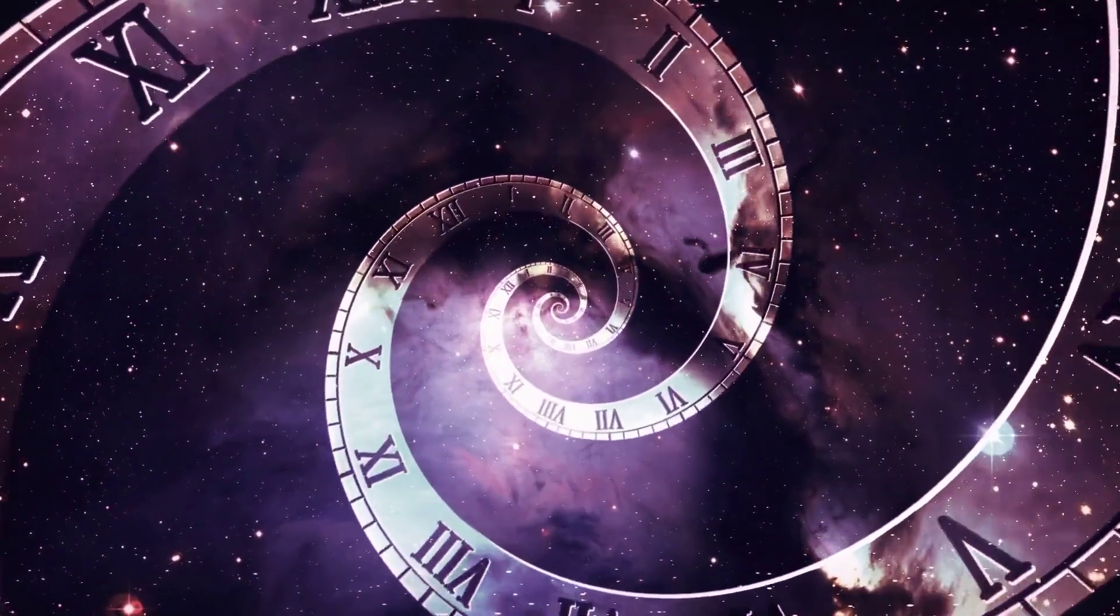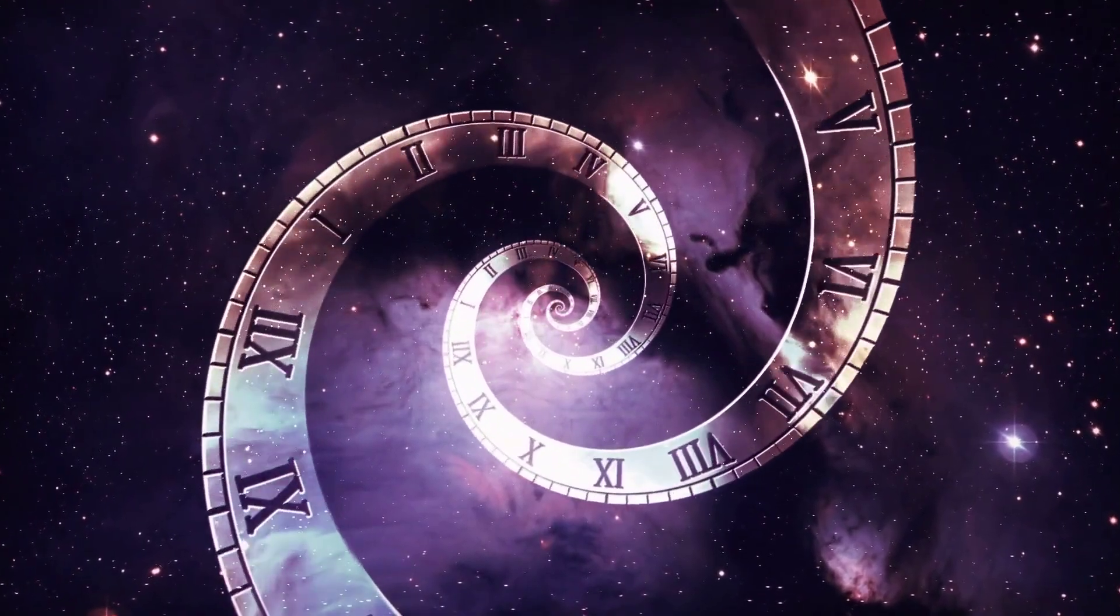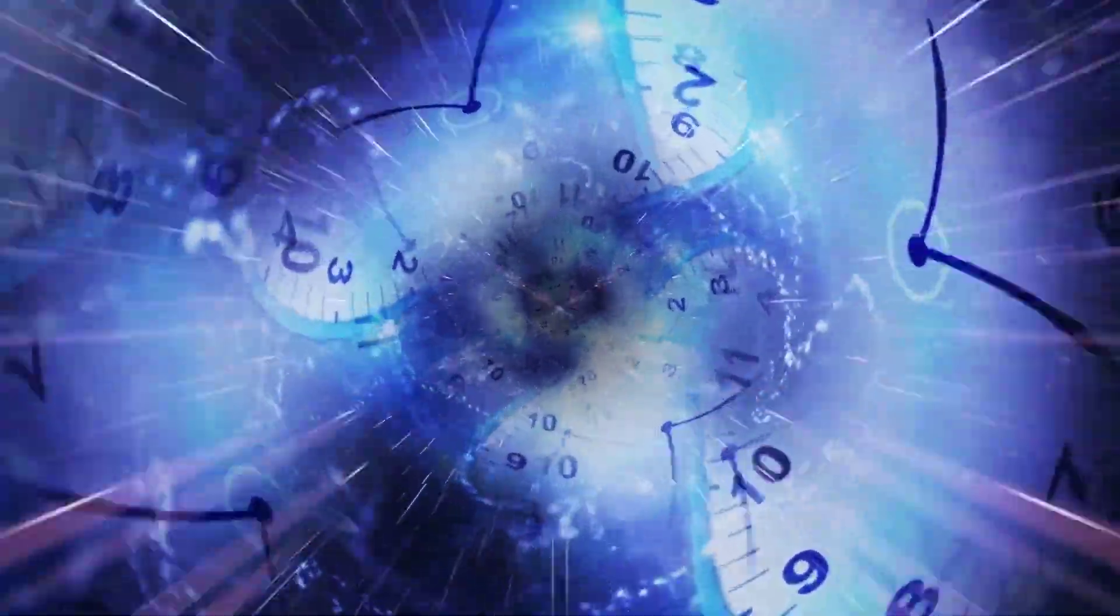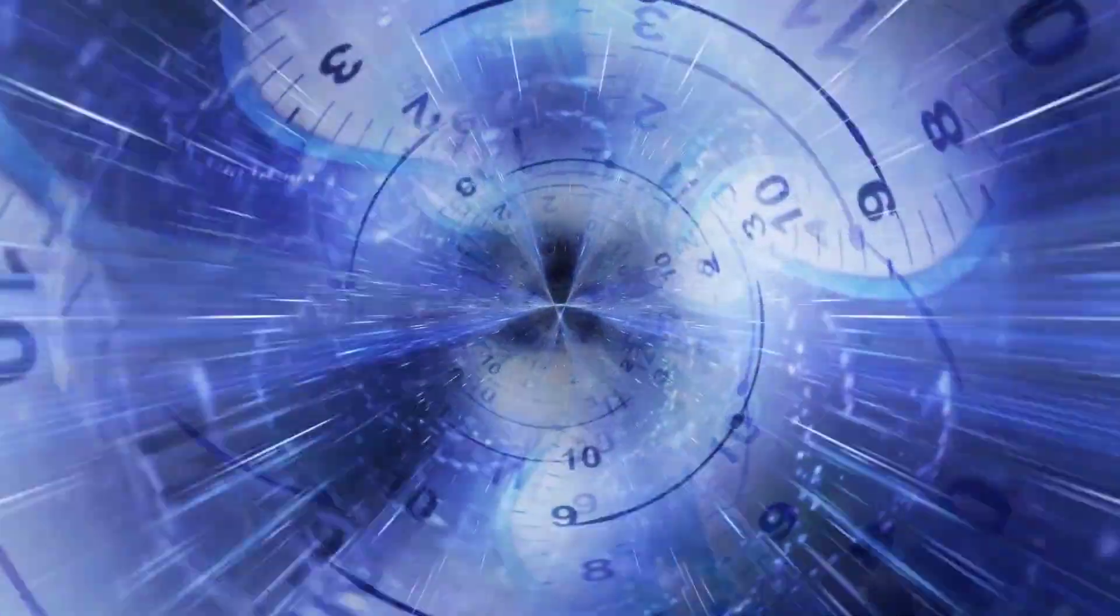One of the most surprising predictions of the general theory of relativity is time dilation, a phenomenon that occurs in the vicinity of massive objects like black holes. Imagine two clocks, one close to a black hole and the other at a great distance from it. The clock closer to the black hole will move slower compared to the one farther away. To a distant observer, it looks like time is literally stretching out near the black hole.